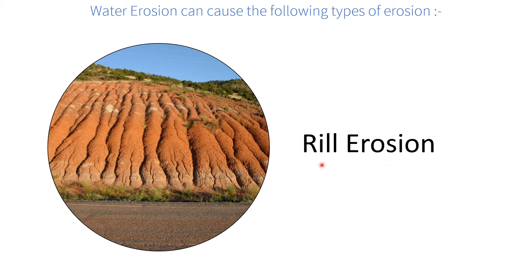The second stage of sheet erosion is known as rill erosion. If erosion continues to go unchecked for a sufficient time, small finger-shaped grooves begin to take formation. These can initially be a few centimeters in depth, but over time these fine rills increase in number and also become deeper and wider, resembling the twigs and branches of a tree trunk.